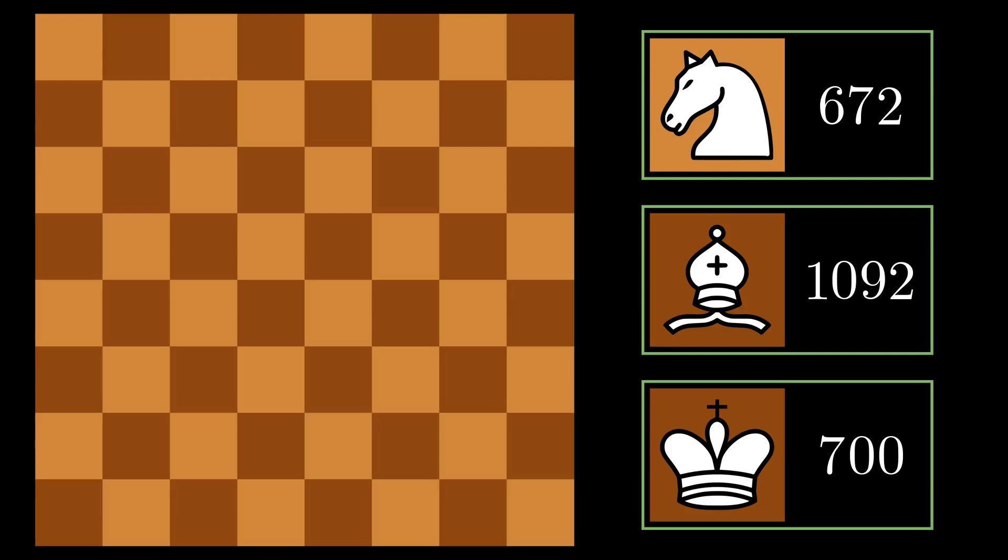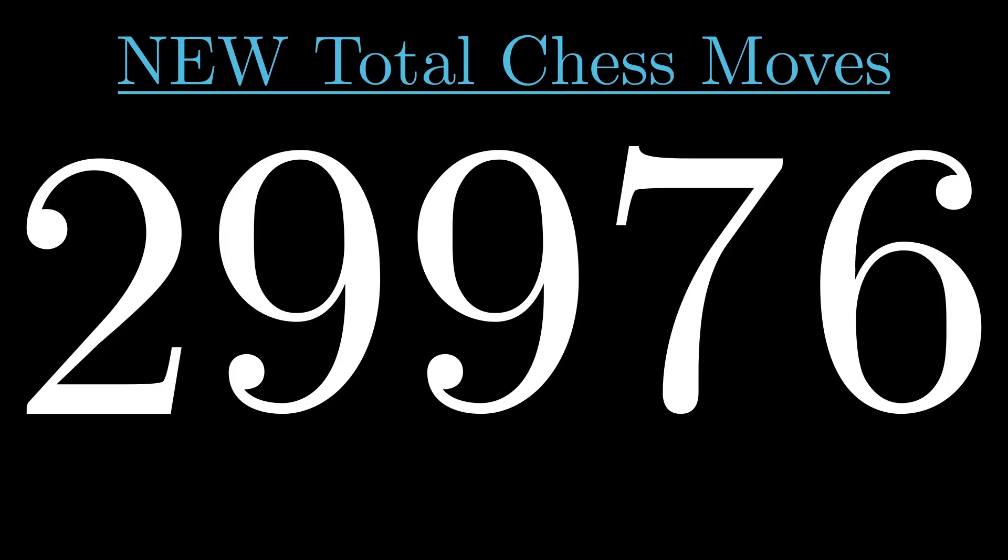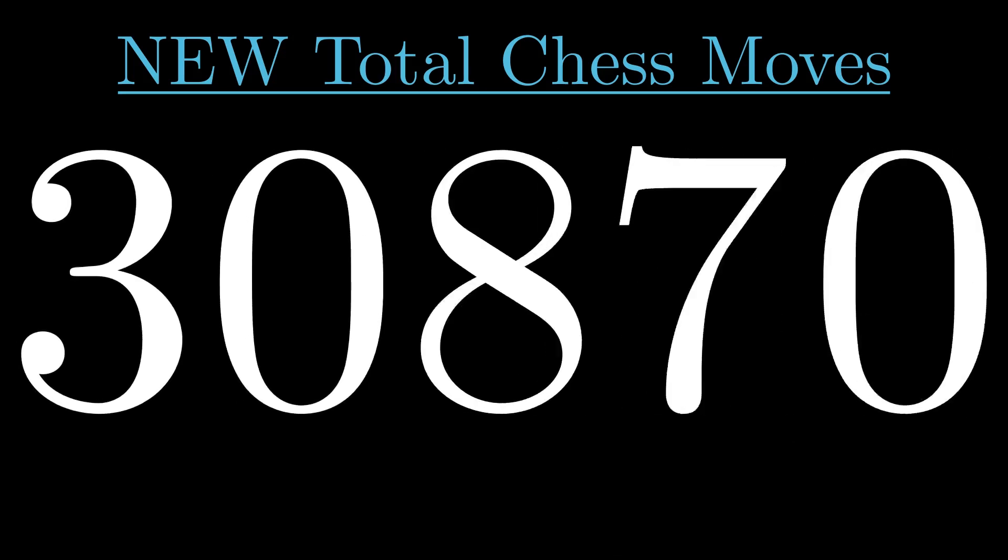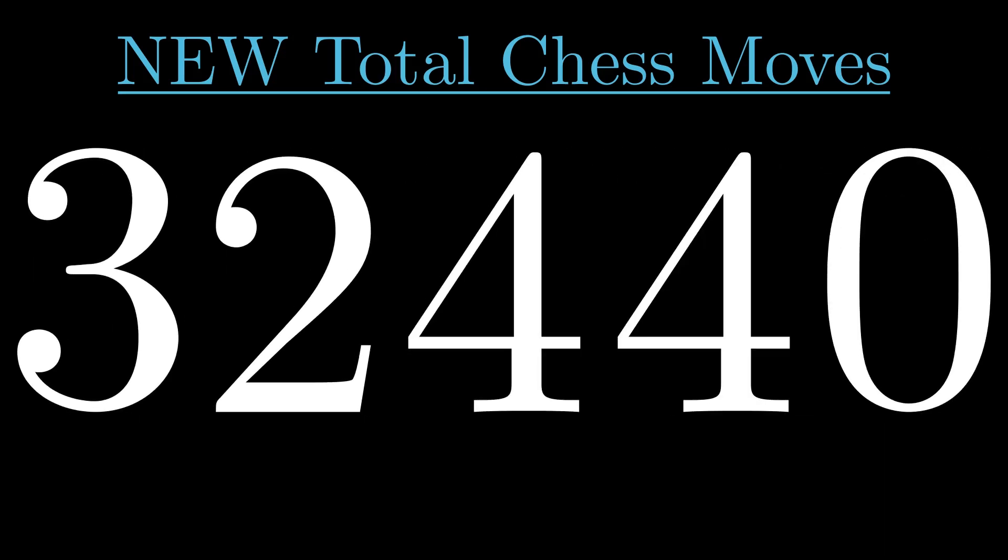Adding these moves to my previous claim allows me to update the total of possible chess moves to 32,440. We have, however, not quite accounted for every possible move because we are forgetting about the Pawn.